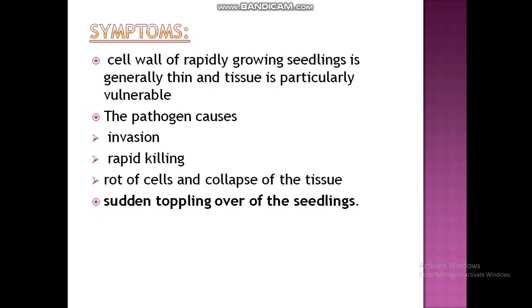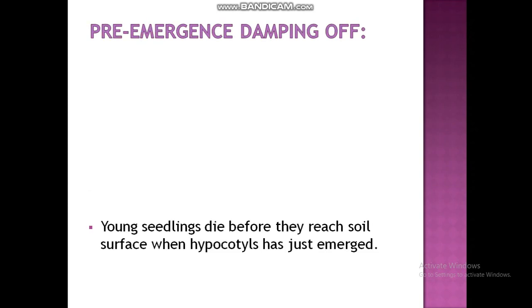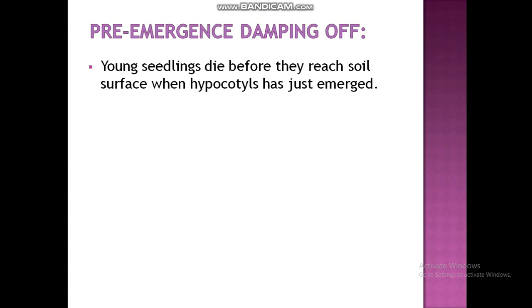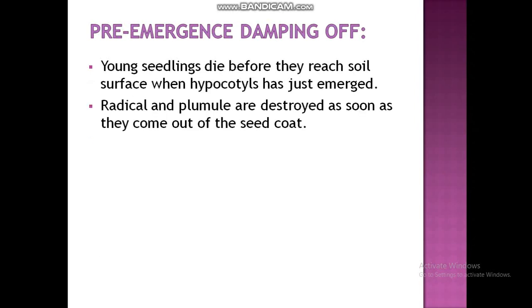Pre-emergence damping off occurs when young seedlings die before they emerge through the soil surface. The hypocotyl has just emerged and the seedlings die — the radicle and plumule are destroyed as soon as they come out from the seed coat.